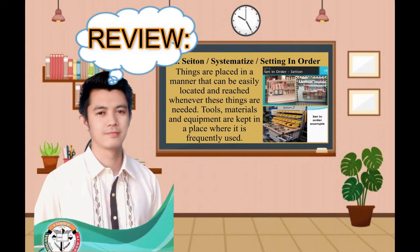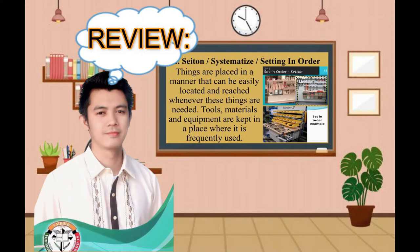Next, Seiton, or what we called systematize, or setting in order. Things are placed in a manner that can be easily located and reached whenever these things are needed. Tools, materials, and equipment are kept in a place where they are frequently used. Seiton is the second step of the 5S method. It means to set in order, or to put everything into its proper place. Things must be placed in a location or manner that can be easily found or reached whenever they are needed.